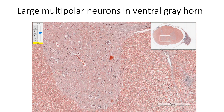Grey matter consists of neuronal cell bodies, their dendrites, beginning of their axons, and termination of axons in the descending tracts, along with neuroglial cells. Ventral horns show large multipolar neurons whose axons form the efferent ventral roots of the spinal nerves. Dorsal grey horn and grey commissure show relatively small-sized neurons. Neurons having related functions are grouped together in both ventral and dorsal horns to form nuclei.